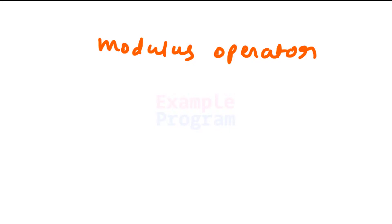Now we know how to determine whether a number is even or odd. But how do we get the remainder when dividing a number by another number? In Java, we have an operator called the modulus operator, denoted by the percentage symbol (%). When you use this operator, you get the remainder, and you will learn how to use it in this program.